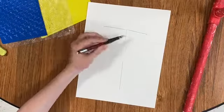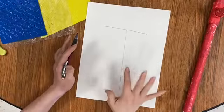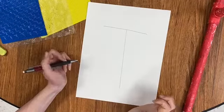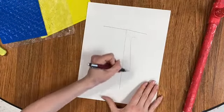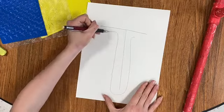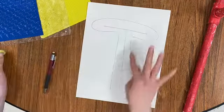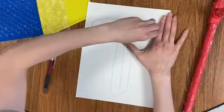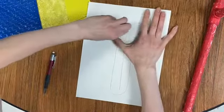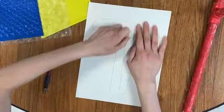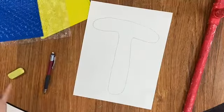Start by just writing really big that letter. Next we're going to trace around that letter. Next we're going to erase the first letter we did that's just in writing. And now we have a bubble letter.